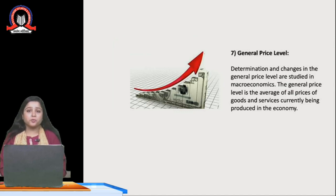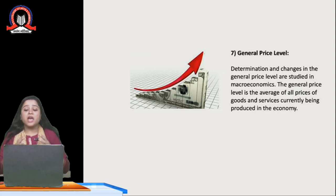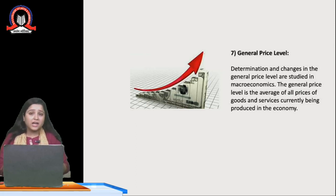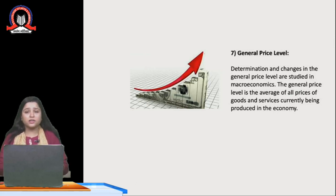The next feature is general price level. Macroeconomics determines and highlights the changes in the general price level. General price level means the average of all prices of goods and services currently being produced in the economy. In an entire economy in a year, how many goods and services are produced and how the pricing of those products is fixed — all of that is studied under macroeconomics.